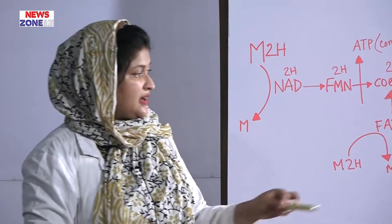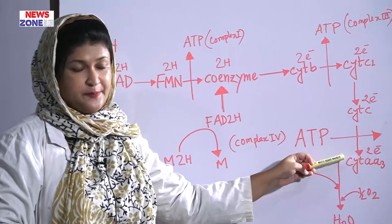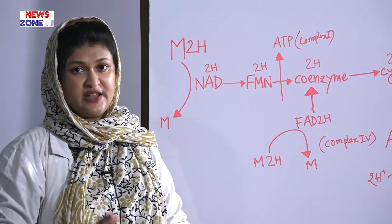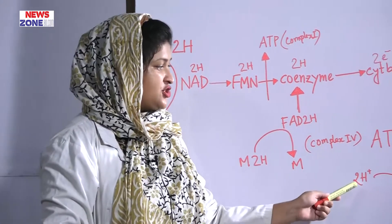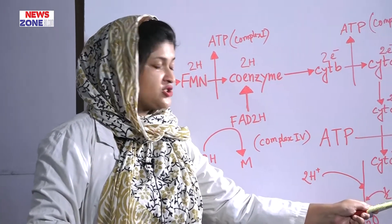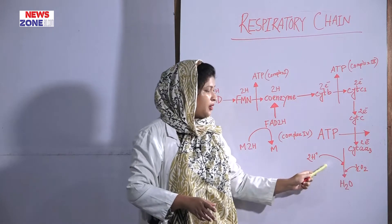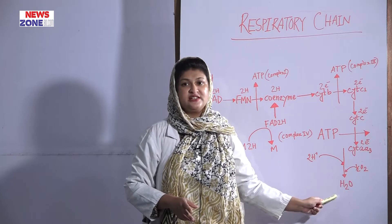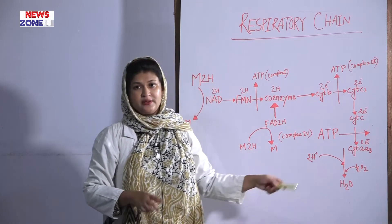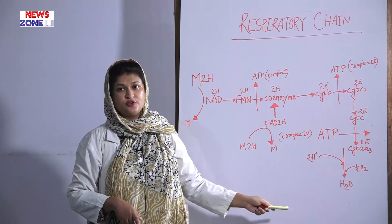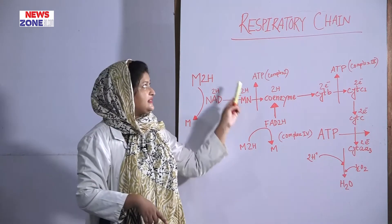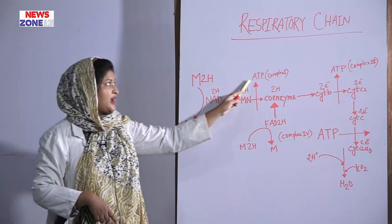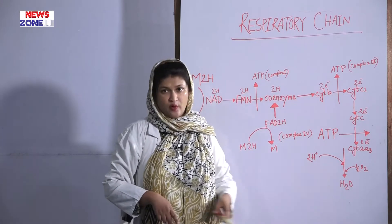The last component, cytochrome AA3, also known as cytochrome oxidase, functions to reassociate hydrogen atoms and oxygen atoms — specifically half a molecular oxygen — to form water. This water produced in the respiratory chain is called metabolic water because it is produced during metabolism. So the main products of the respiratory chain are ATP and metabolic water.